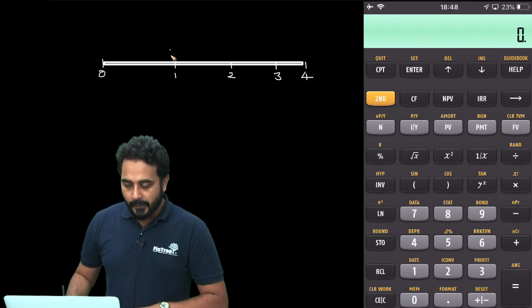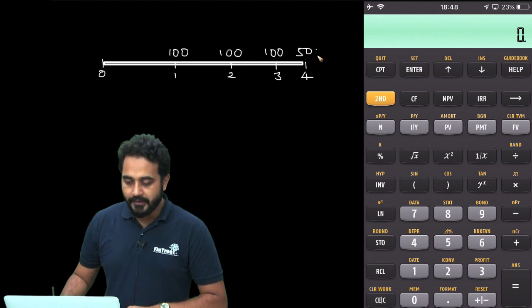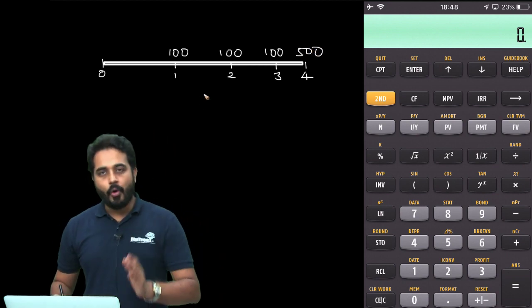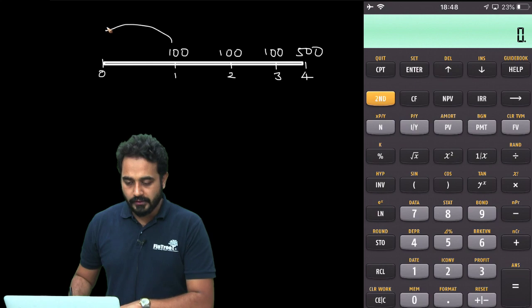And you are receiving 100, 100, 100 and 500. And you would want to discount all of these cash flows in one go at time 0.